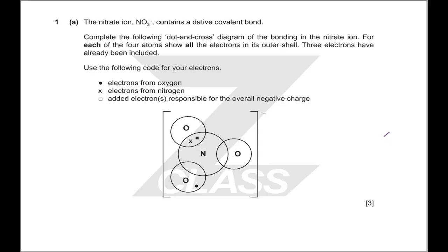The first question is about dot-cross bonding. More than anything, a lot of this question comes from carefully noting what the question wants and making sure that you draw them correctly. Simple things like where it contains a dative covalent bond — you need to know what that is. A dative covalent bond is one with two electrons from the same atom, so you just need to make sure that you draw that on, i.e. having two electrons coming from your nitrogen in the picture that you're drawing.